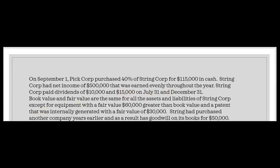40% purchased sounds like the equity method. Unless they indicate no significant influence, you would expect significant influence at 40%. The facts also state that book value and fair value are the same for all assets and liabilities except: equipment with a fair value $60,000 greater than book value, and an internally generated patent with no book value but a fair value of $30,000. That means we'll have to write up that $90,000.